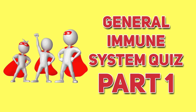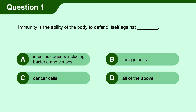With all that said, let us get started. Question 1. Immunity is the ability of the body to defend itself against: A. infectious agents including bacteria and viruses, B. foreign cells, C. cancer cells, D. all of the above.